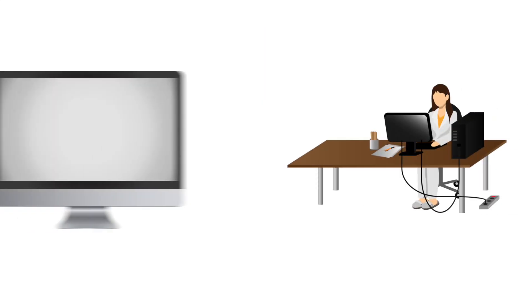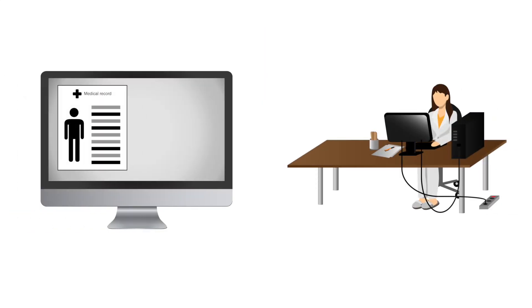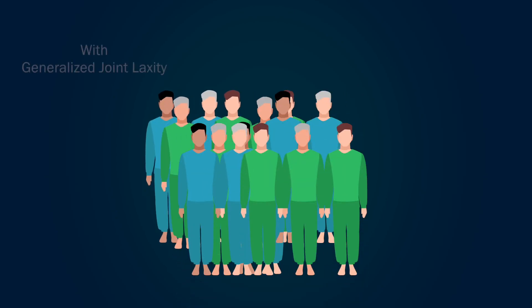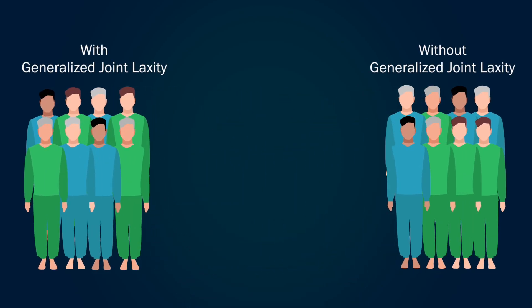The researchers retrospectively reviewed the records of patients over the age of 18 who underwent an ACL reconstruction with a bone patellar tendon bone autograft due to an isolated ACL tear. The patients were split into two groups: those with and those without generalized joint laxity. Generalized joint laxity was defined using the Baton and Horan criteria, which was modified in order to exclude the involved knee.